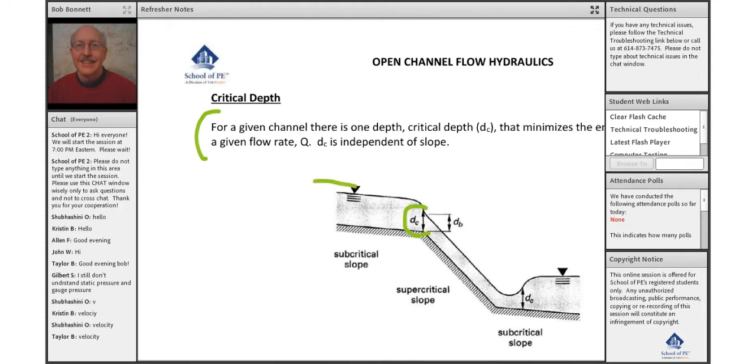It occurs, for instance, where we have subcritical flow, and that is where our depth of flow is greater than critical depth. For instance, at a channel configuration like this,